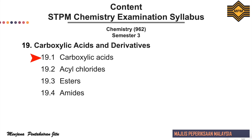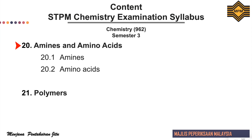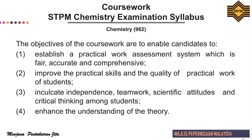Topic 19 is carboxylic acids and derivatives, covering 19.1 carboxylic acids, 19.2 acyl chlorides, 19.3 esters, and 19.4 amides. Topic 20 is amines and amino acids. And last but not least is Topic 21, which covers polymers.